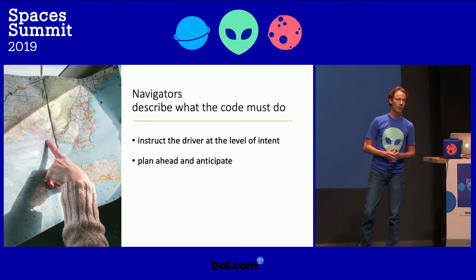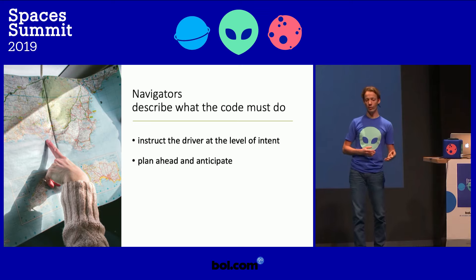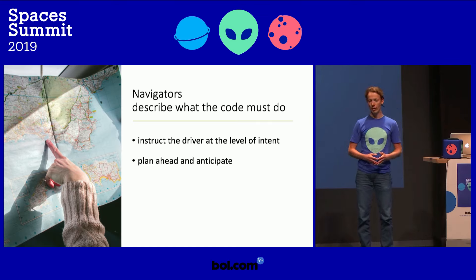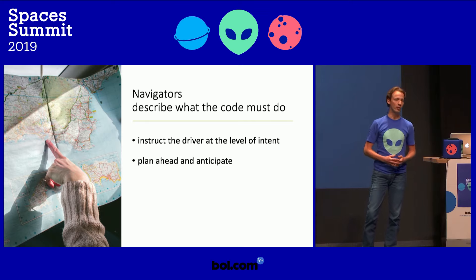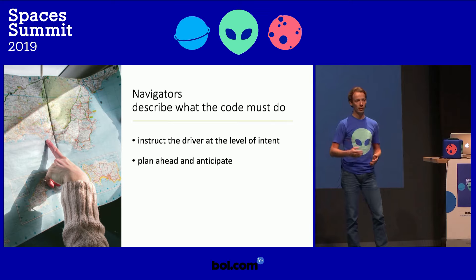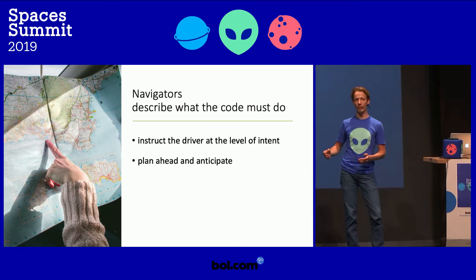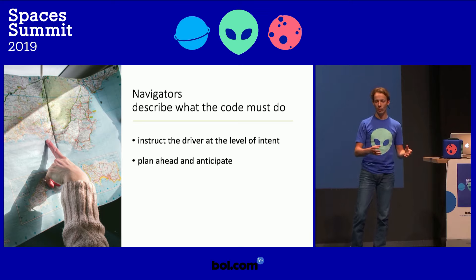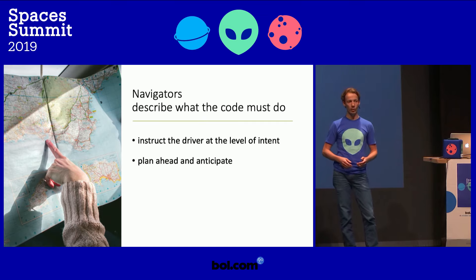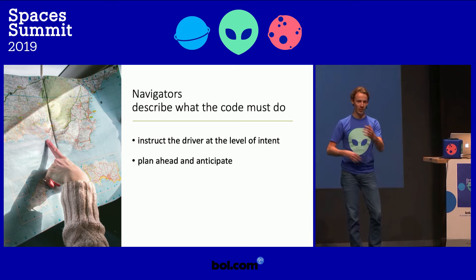The navigators describe what the code must do — they instruct the driver first at the level of intent: what should the feature do, and then one level deeper, we need a method that takes A and returns B. They may give suggestions about implementation depending on the experience and knowledge of the driver. If the driver is junior, they probably need more hints to implement the thing. The navigators also look ahead: while code is being written, navigators are already thinking about what tests are needed or what the next step in the story should be — keeping the code flowing onto the screen.